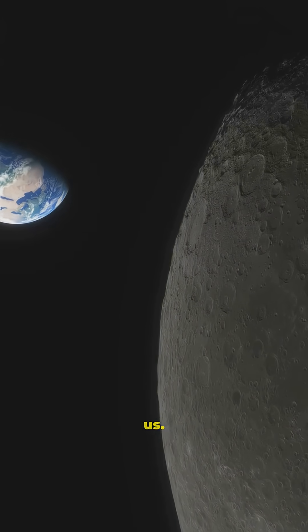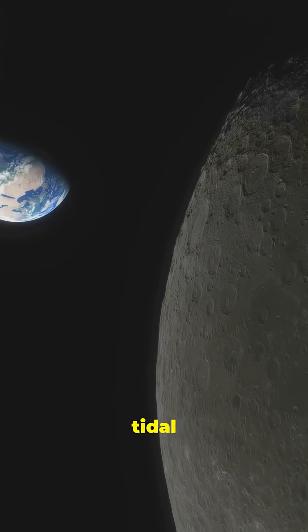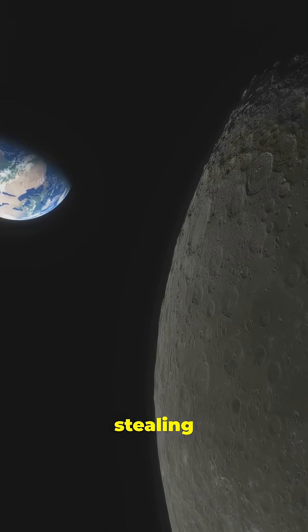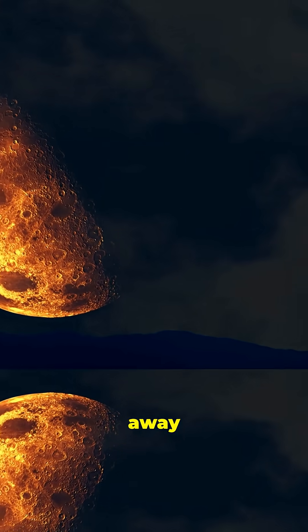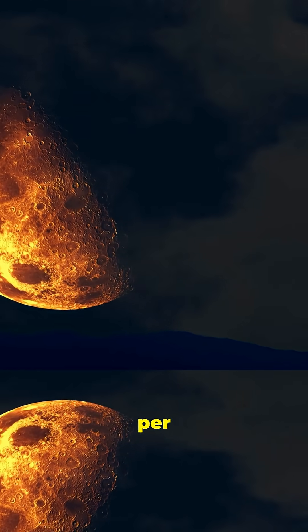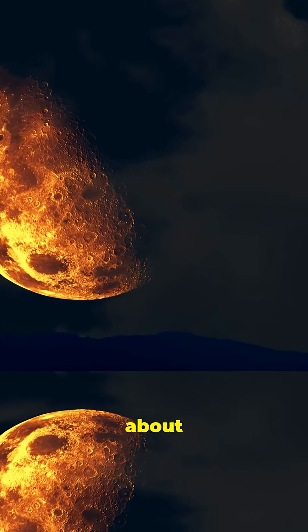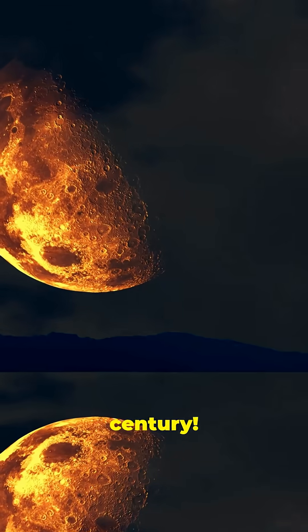You know the Moon is slowly leaving us. Thanks to tidal friction, the Moon is gradually stealing Earth's rotational energy. As a result, the Moon drifts away by about 3.8 centimeters per year, and Earth's days get longer by about 1.7 milliseconds per century.